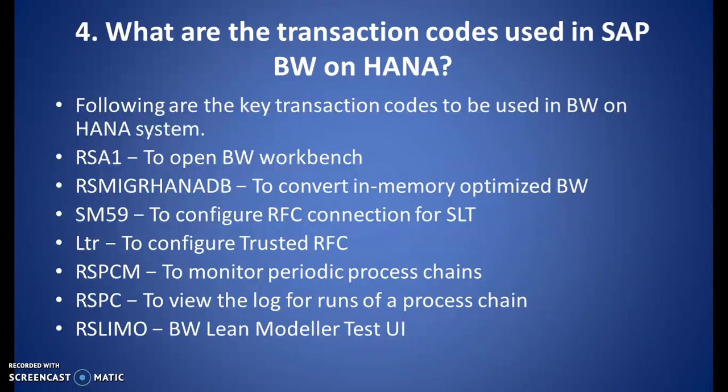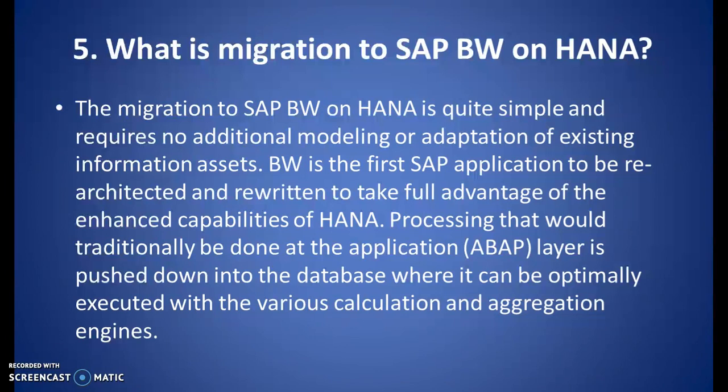What are the transaction codes used in SAP BW and HANA? Key transaction codes include: RSA1 to open BW Workbench (similar to BI 7.0 or BW 7.3), RS7 to open BW Workbench, RS_MIGR_HANA_DB to convert in-memory optimized BW (specific to BW 7.5), SM59 to configure RFC configuration for SLT, LTR to configure trusted RFC, RS_PCM to monitor periodic process chains, RS_PC to create a process chain, and RS_LIMO for BW Lean Modeler.